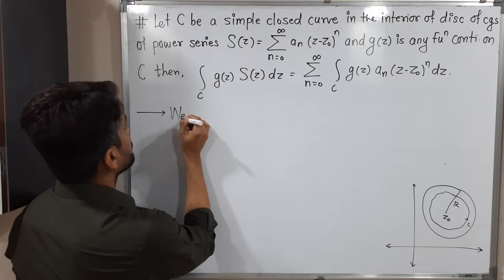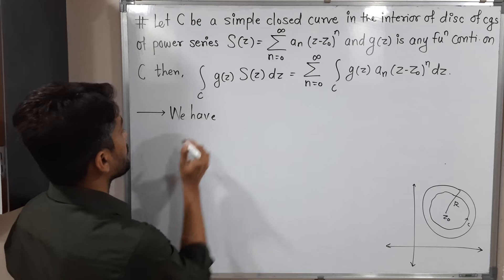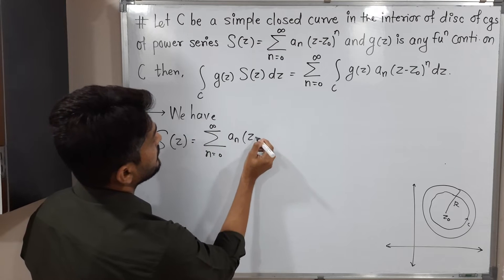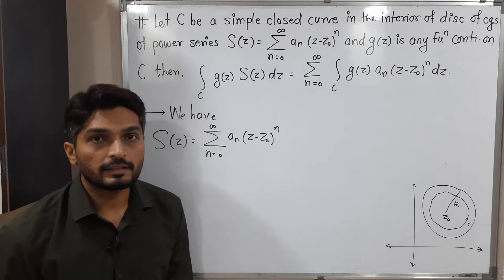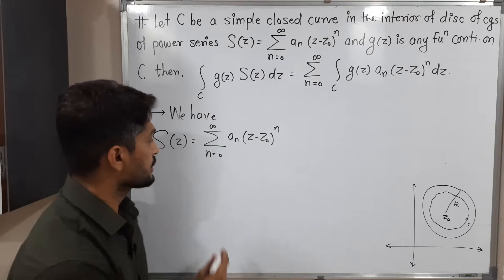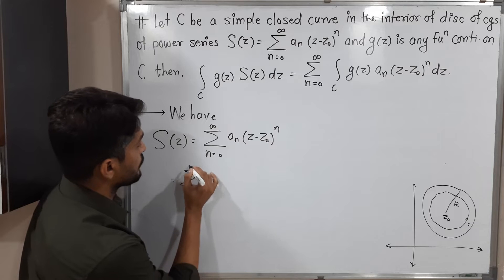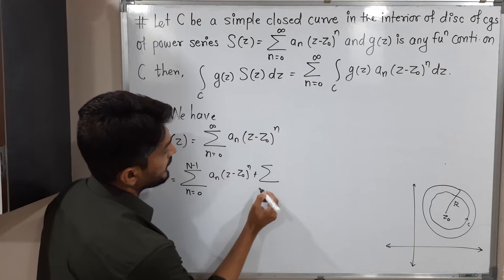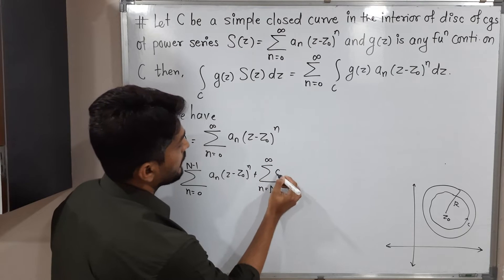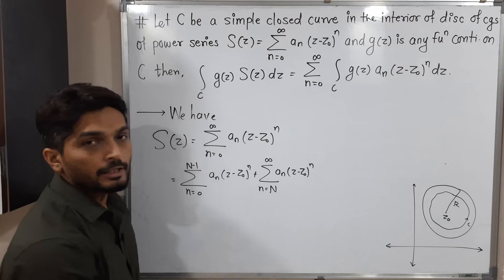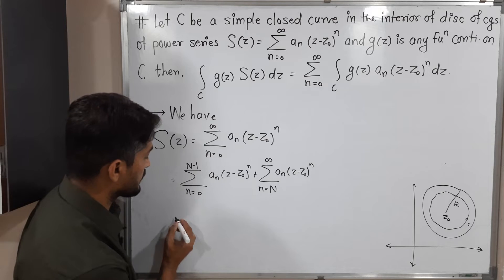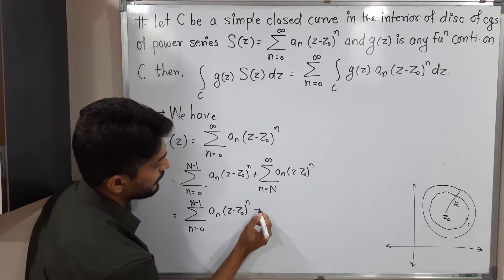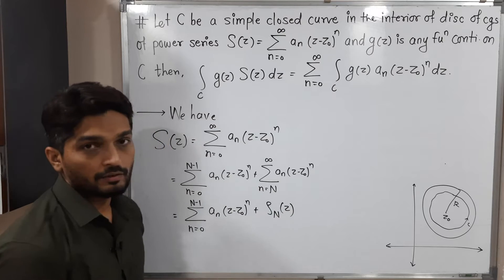The given information is that S of z equals summation from n = 0 to infinity of aₙ(z - z₀)ⁿ. We can split this into two summations: the first n terms, summation from n = 0 to N−1 of aₙ(z - z₀)ⁿ, and the second part containing infinitely many terms from n = N to infinity, which we denote by ρ_N(z) — the remainder function. So S(z) = [summation from n=0 to N−1 of aₙ(z − z₀)ⁿ] + ρ_N(z).